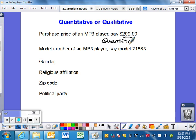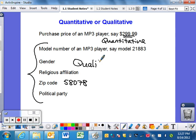The model number for an MP3 player, 21883, is a number but doesn't make sense to add or subtract. Gender is a group, religious affiliation is a group, a zip code like 58078 for West Fargo is a number but you can't add zip codes together meaningfully, and political party is a group. All of these are qualitative instead of quantitative.